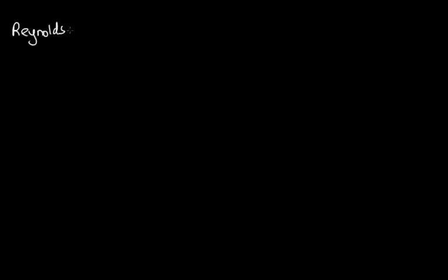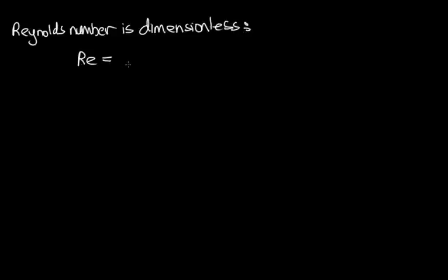Reynolds number is actually dimensionless. Reynolds number is given by the density times the velocity times the diameter over the viscosity. So let's show that this is dimensionless, and in doing so we'll show the units for the viscosity.